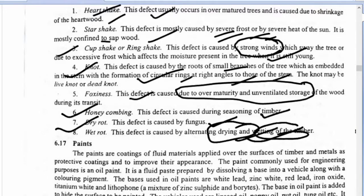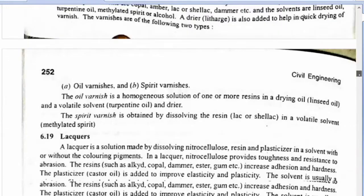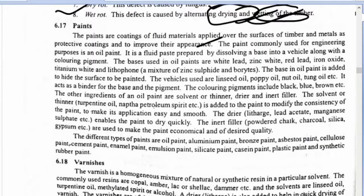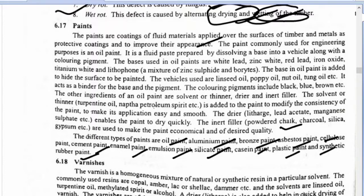Paints are coatings of fluid material applied over the surface of timber and metals as protective coatings and to improve their appearance. Different types of paints include: oil paints, aluminium paints, bronze paints, asbestos paints, cellulose paints, cement paint, enamel paint, emulsion paint, silicate paint, resin paint, plastic paint, and synthetic rubber paint.